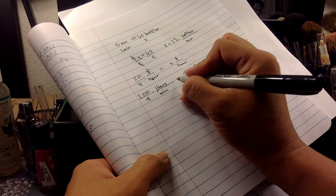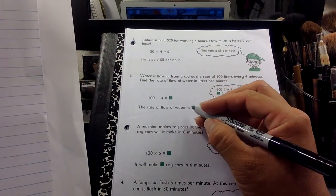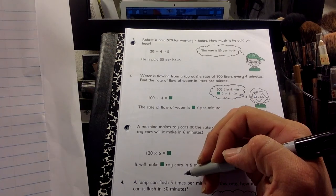And I abbreviated it. Instead of having to write out liters, I just use the script L. Yeah. So I would say 25 liters per minute.